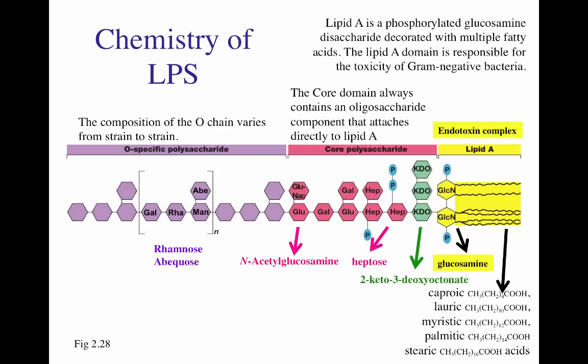Here is the structure of a subunit of LPS. The lipid A molecule is a phosphorylated glucosamine disaccharide — two units bound together with phosphates attached. To them, you have multiple fatty acids attached: caprionic, lauric, myristic, palmitic, and stearic phospholipids.